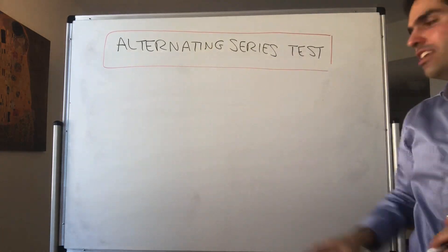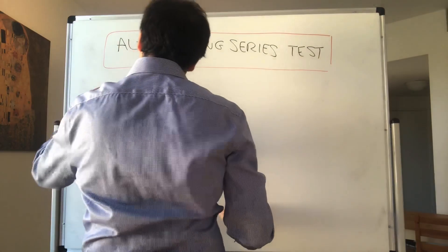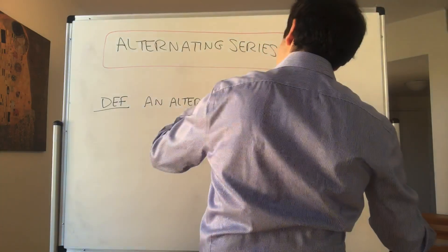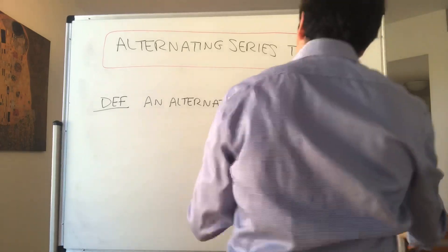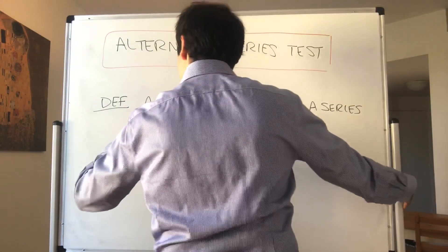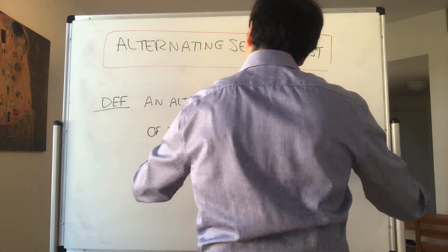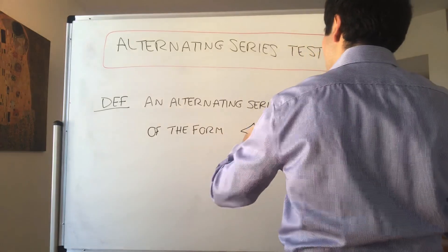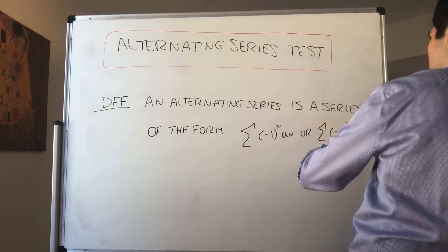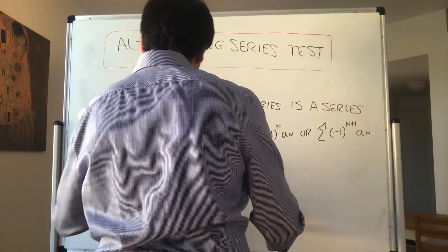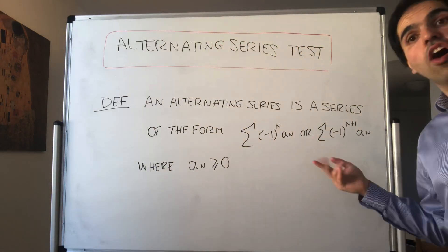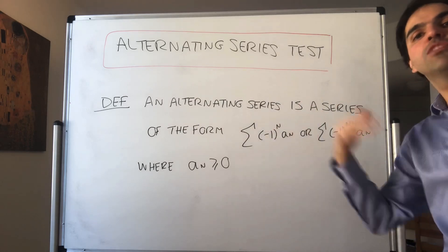So let me first define what it means for a series to be alternating. An alternating series is simply a series of the following form: either the sum of (-1)^n * a_n or the sum of (-1)^(n+1) * a_n, where a_n is non-negative. Essentially, it is just a series that alternates between plus and minus signs.